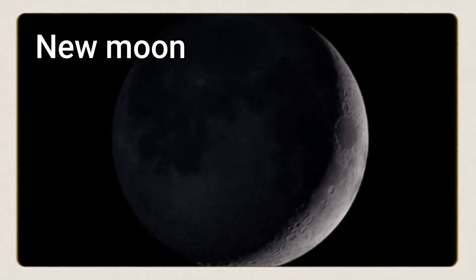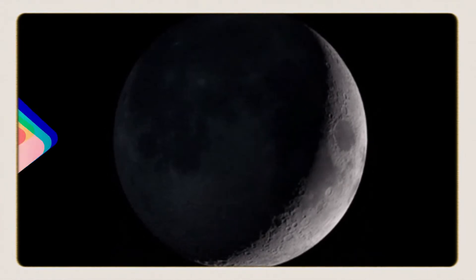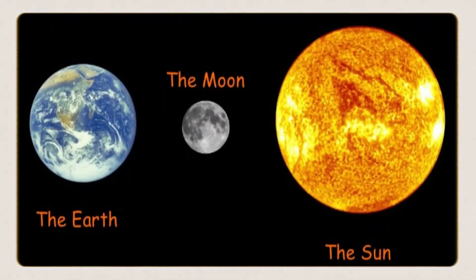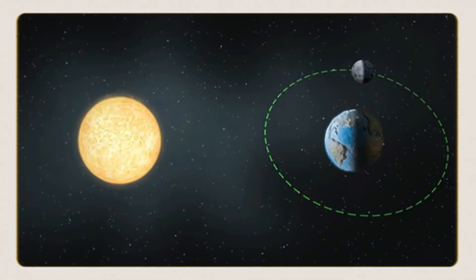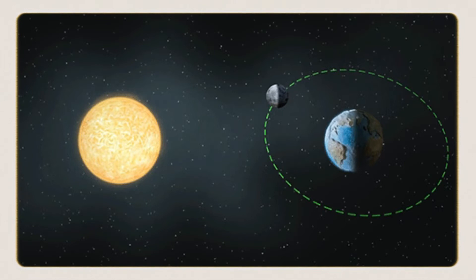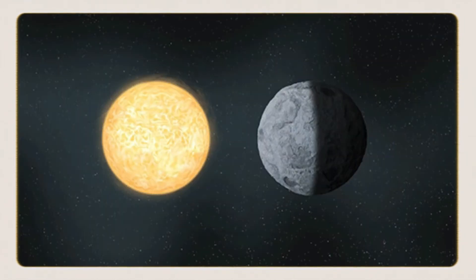In the waxing phase, first we see the new moon. The new moon occurs when the moon is in between the earth and the sun and we cannot see the moon at all. This is called new moon, and it is dark on the new moon day.